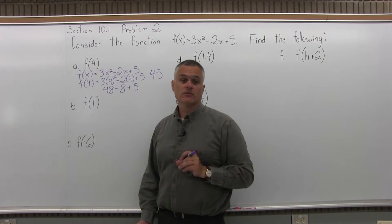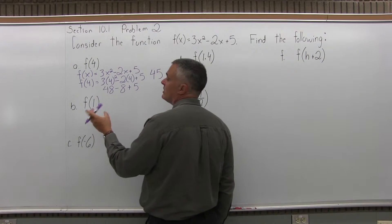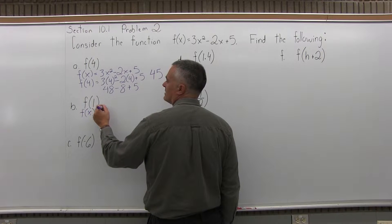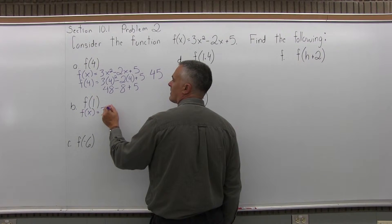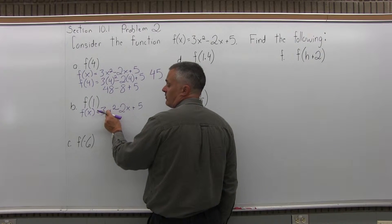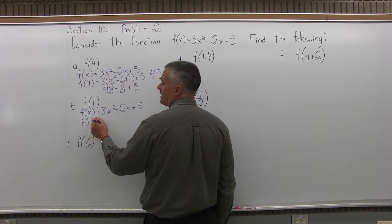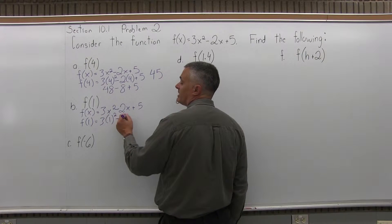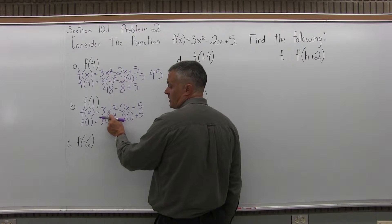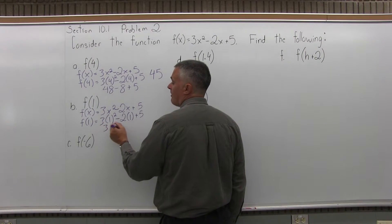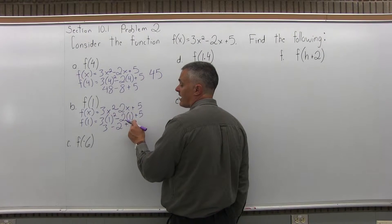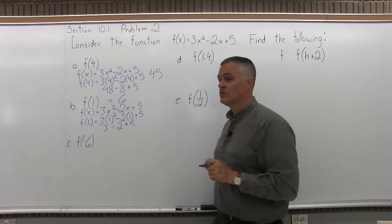Part b says find f of 1, which means put in a 1 as an input, or replace every x with a 1. Start with f of x equals 3x squared minus 2x plus 5. So f of 1 equals 3 times 1 squared minus 2 times 1 plus 5. 1 squared times 3 is 3, minus 2 times 1 is minus 2, plus 5. So 3 minus 2 is 1 plus 5 is 6. f of 1 is 6 — put in a 1, get out a 6.